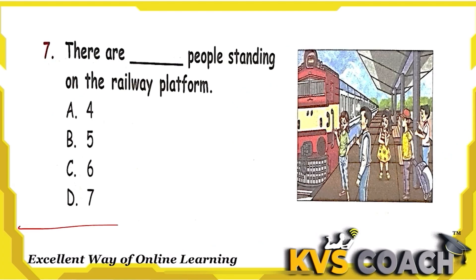In question 7, there are people standing on the railway platform. Let's check how many: 1, 2, 3, 4, and 5. There are 5 people standing on the railway platform.